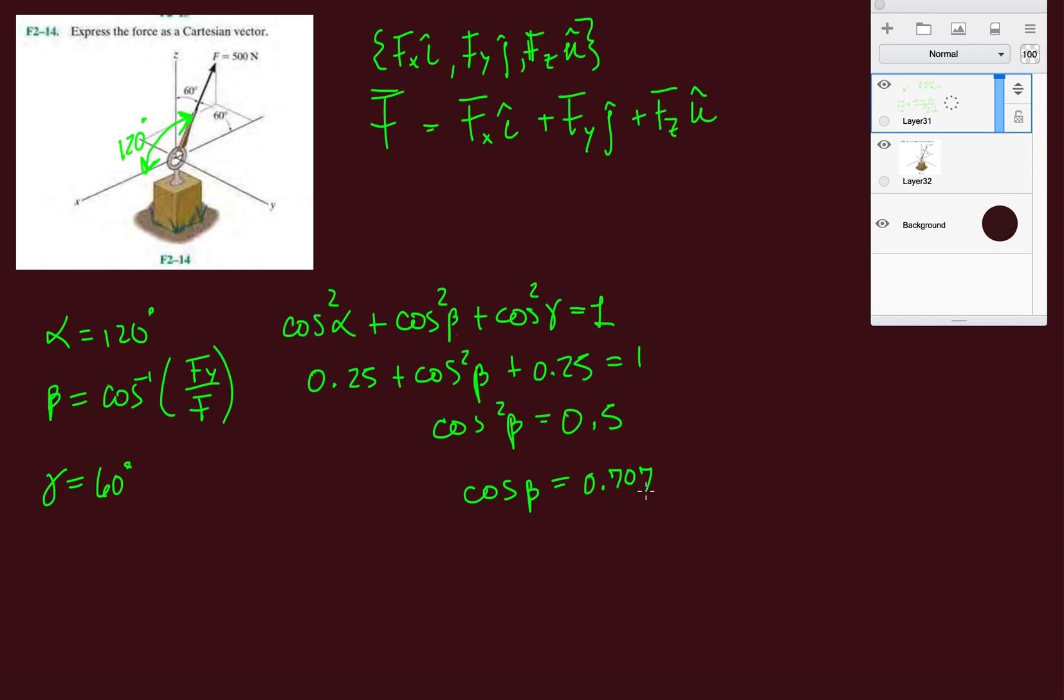We keep solving this - we get cosine beta equals 0.707, and then we do inverse cosine of that and we get beta is 45 degrees. So now we have all our coordinate direction angles: alpha is 120, beta is 45 degrees, and gamma is 60 degrees.